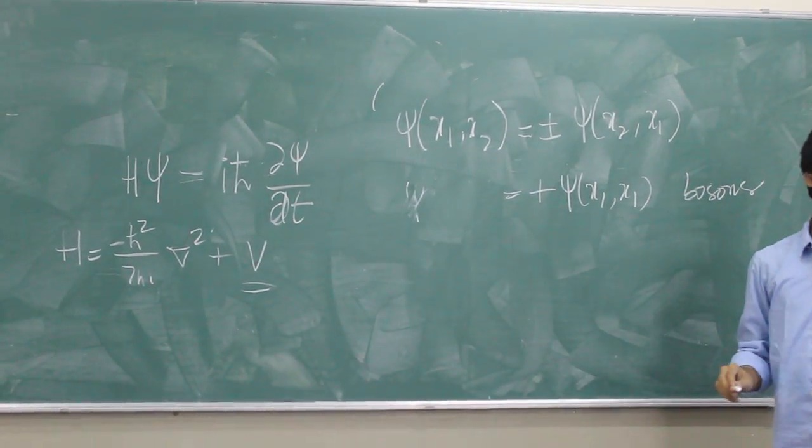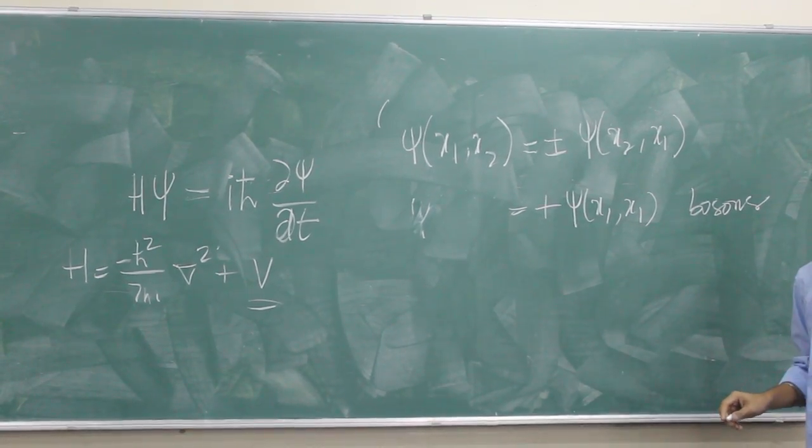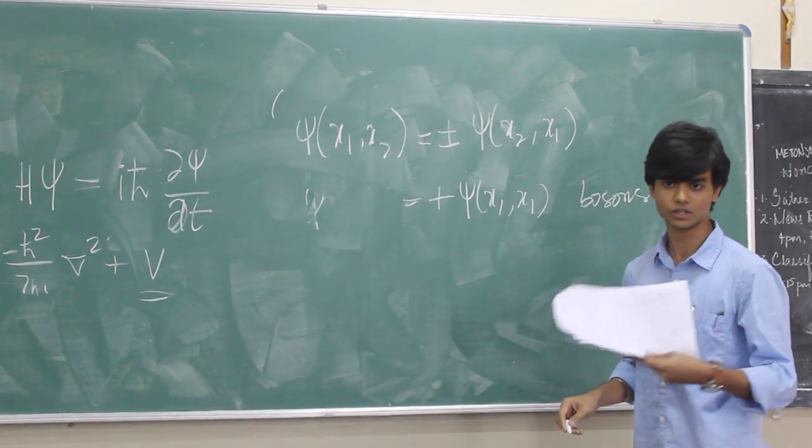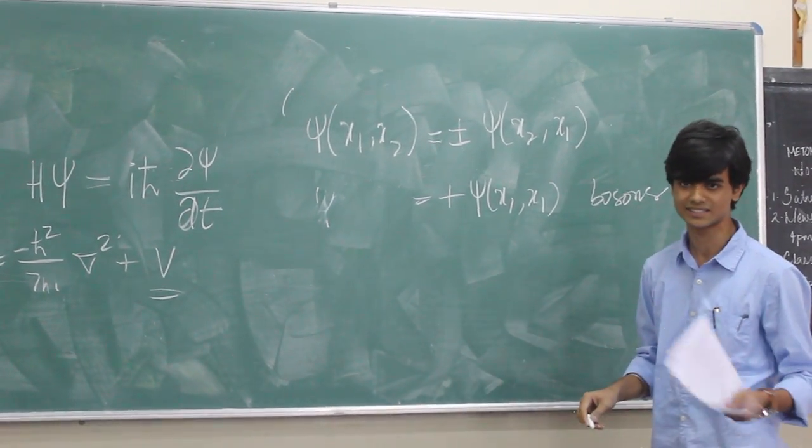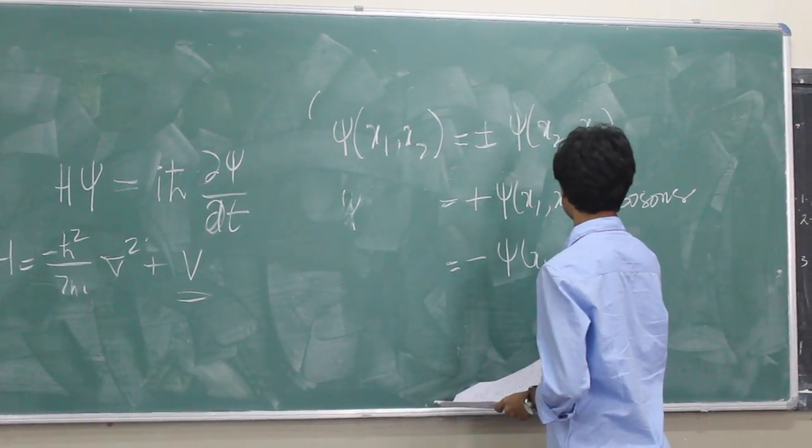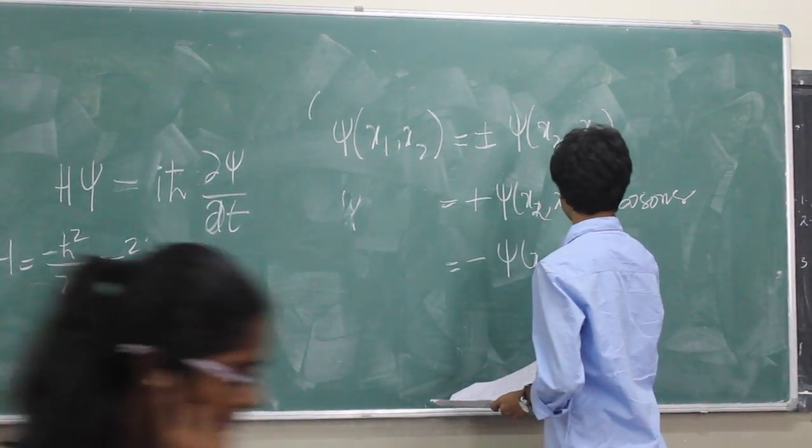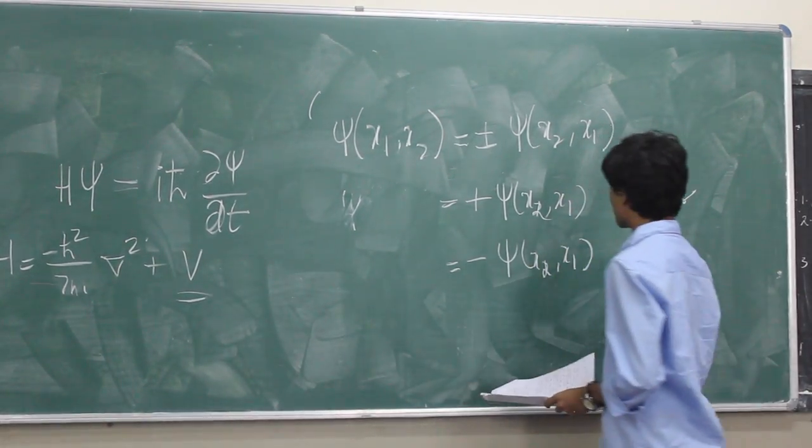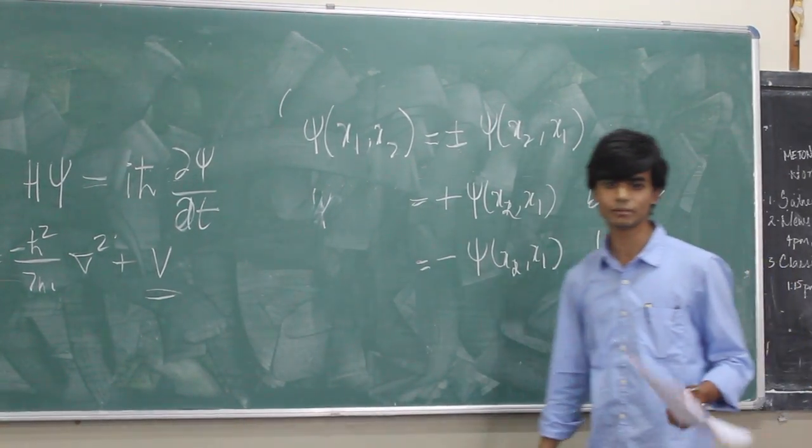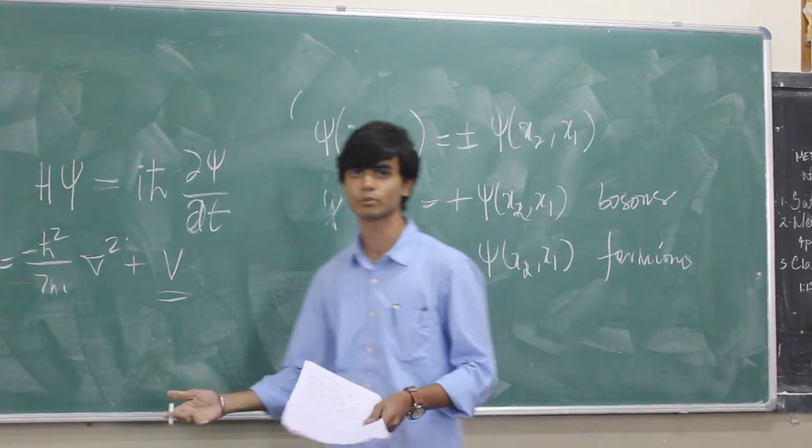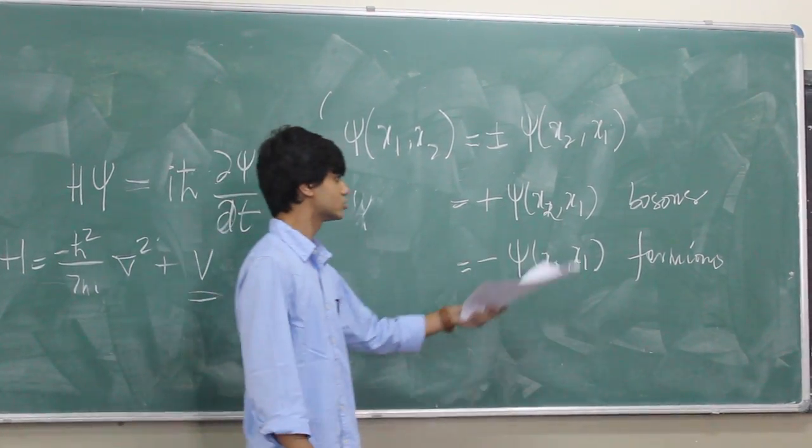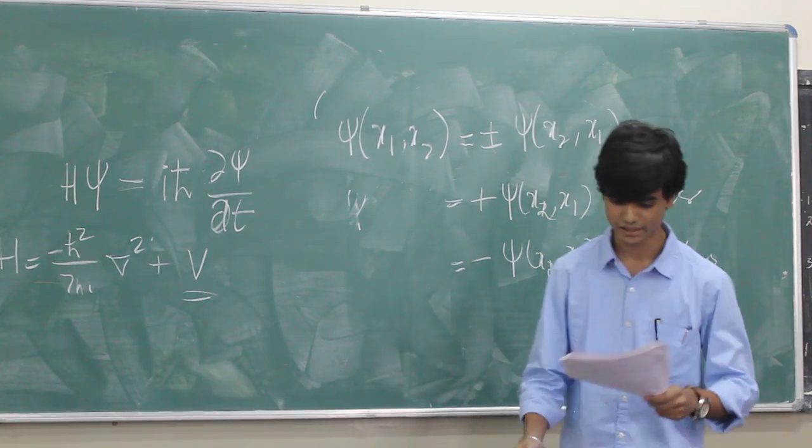Bosons are nothing but your charge, they are force carrying particles. Like for the electromagnetic force, we have photons, and for the nuclear forces, we have the w bosons and the z bosons and so on. Now if this solution was minus of psi of x2, x1, then we have something called fermions. Fermions are the regular matter particles. So your electron, proton, neutron are, in general, called fermions. These two were the classes of particles which we found with quantum mechanics.